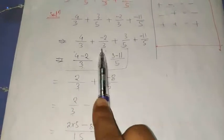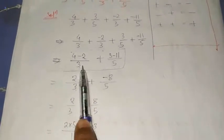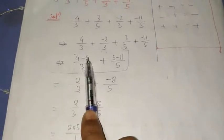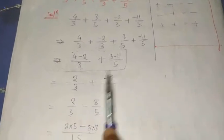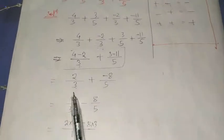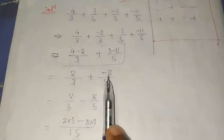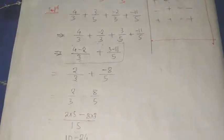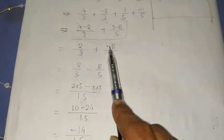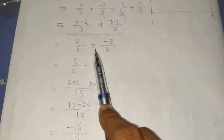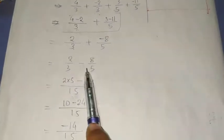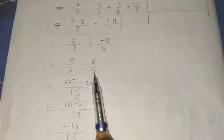Take LCM. The LCM of the first group is 3. So 4 by 3 plus minus 2 by 3 gives us 2 by 3. For the second group: 3 by 5 plus minus 11 by 5 gives us minus 8 by 5. Here the negative sign multiplied with the positive sign gives a negative sign. So we now have 2 by 3 minus 8 by 5.